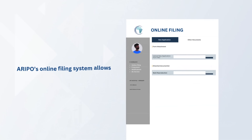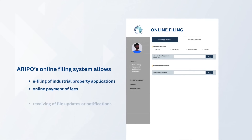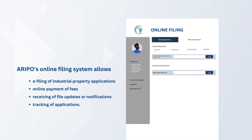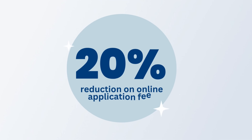ARIPO's online filing system allows e-filing of industrial property applications, online payment of fees, receiving of file updates or notifications, and general tracking of applications. The e-filing option comes with an added benefit of a 20% reduction on the application fees.